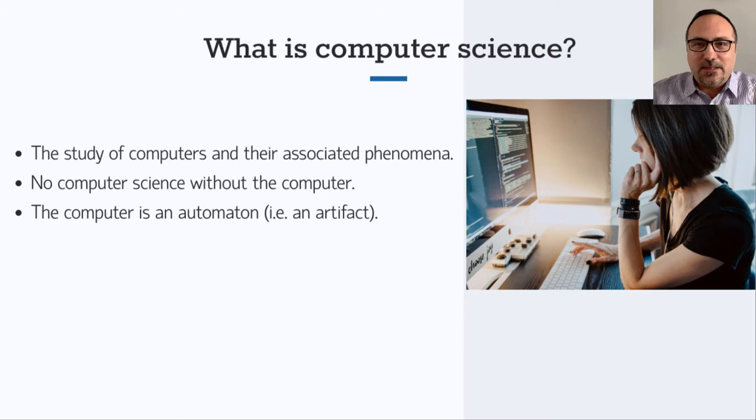So what is computer science? A classical answer is that computer science is the study of computers and their associated phenomena. It centers on the computer itself, and certainly there would be no computer science without the computer.